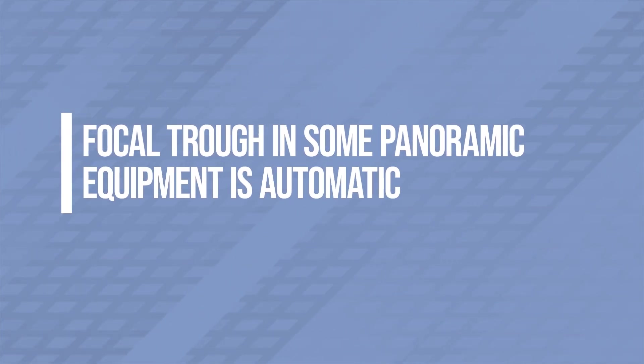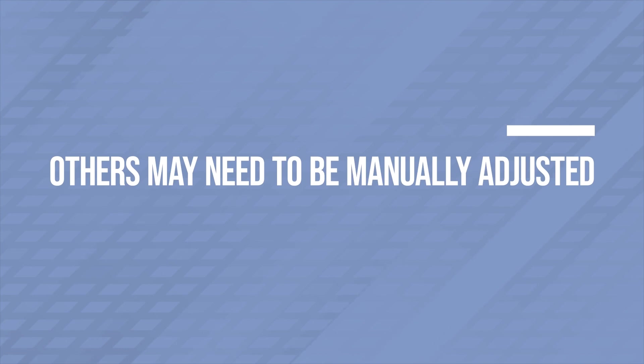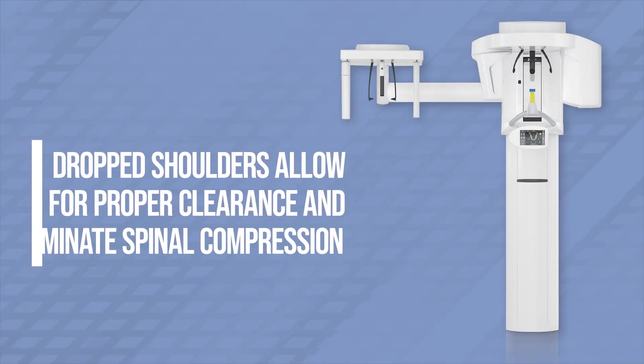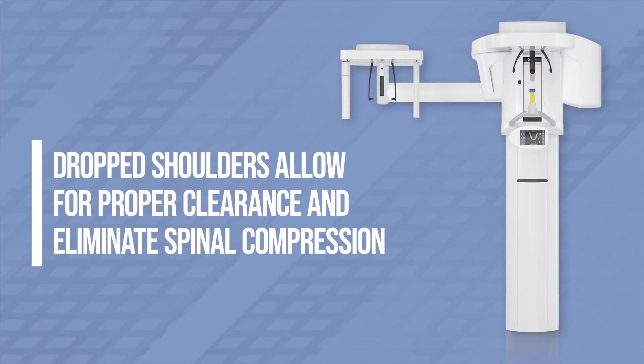The focal trough in some panoramic equipment is automatic; others require manual adjustment depending on the patient's anatomy or bite. You may have patients that have trouble standing straight up, which is important for eliminating spine compression in your images. It may be best to sit those patients in a chair and allow them to lean back while still holding on to the equipment, so the shoulders drop to allow for a clean sweep of the tube head around the patient while eliminating spine compression. Taller patients with a higher center of gravity may have a tendency to sway, and it is also best to sit those patients down, as well as small children who may want to fidget inside the panoramic unit.